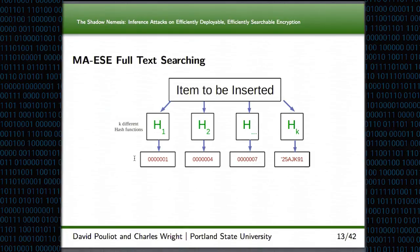However, a typical email server doesn't give us a bloom filter to use. So what Mimesys does with their construction is they cut off the last step — they take their item to be inserted, take k different hash functions, and then just stop with the outputs of those hash functions.